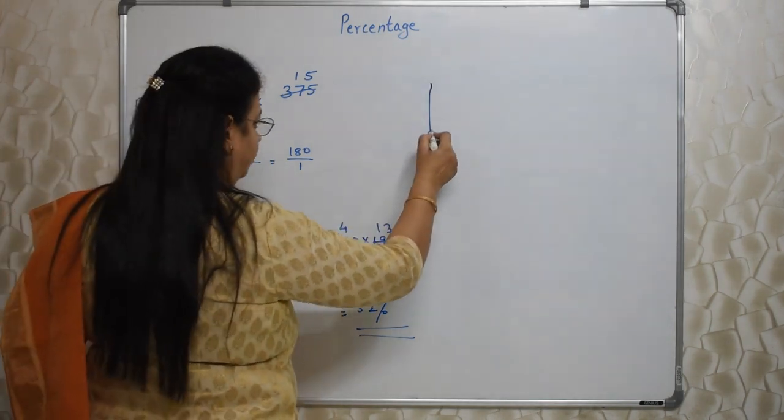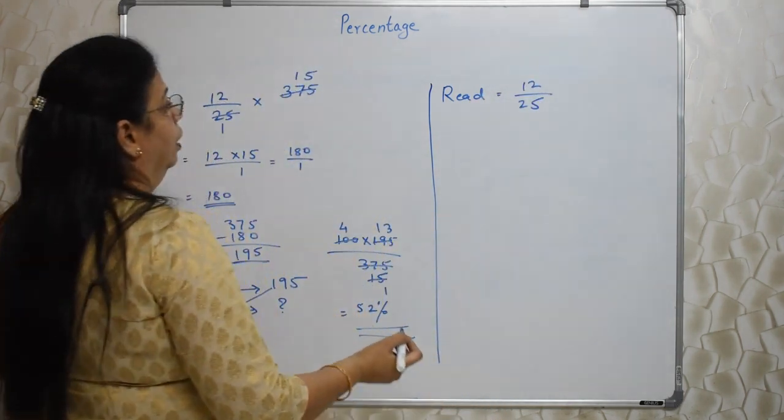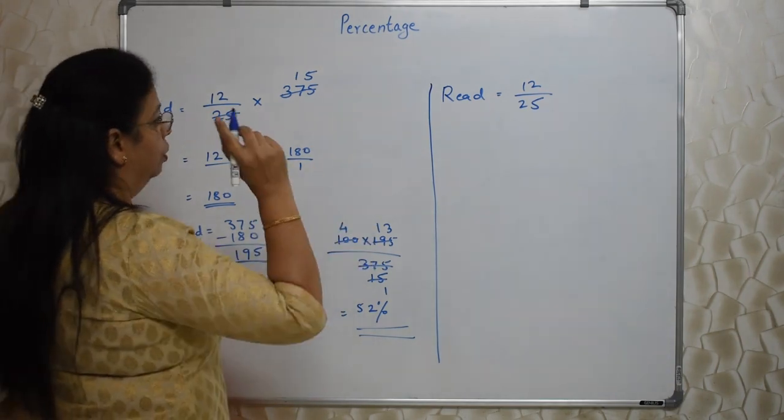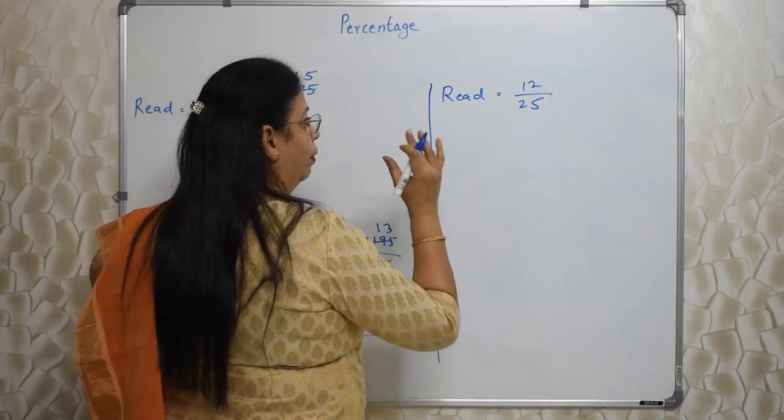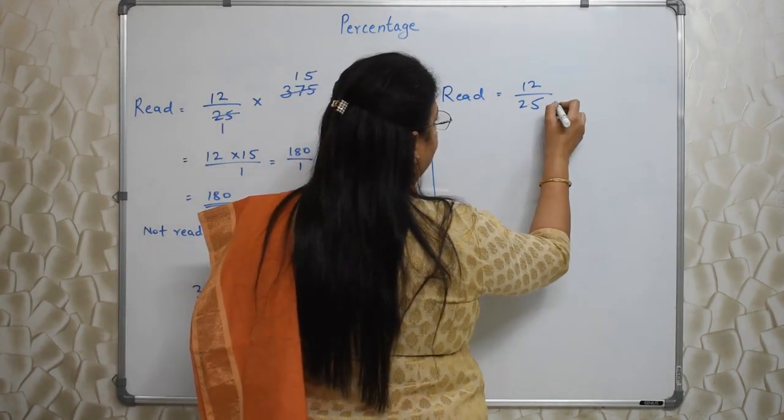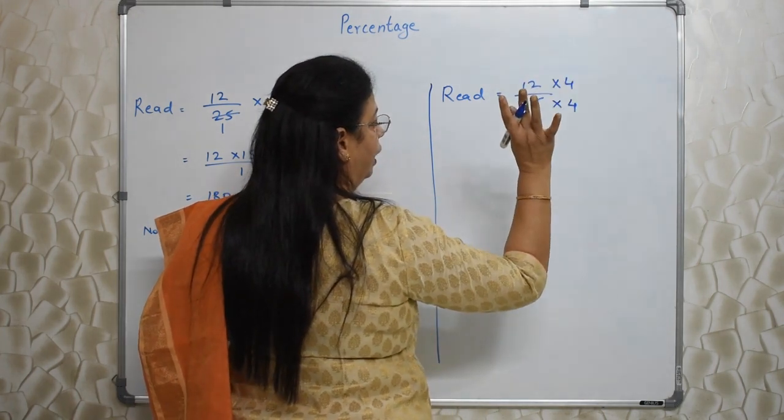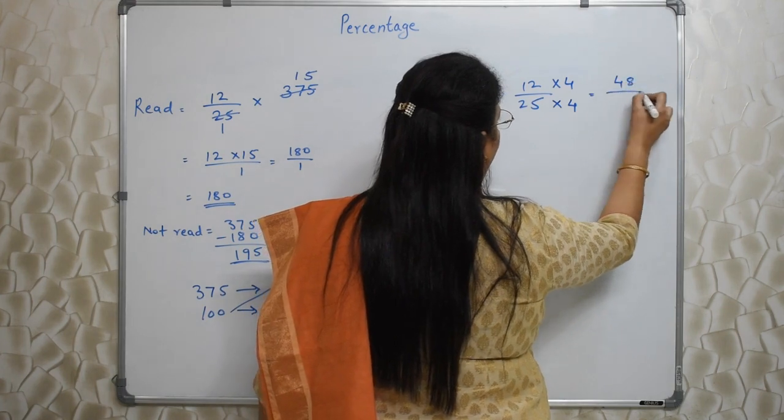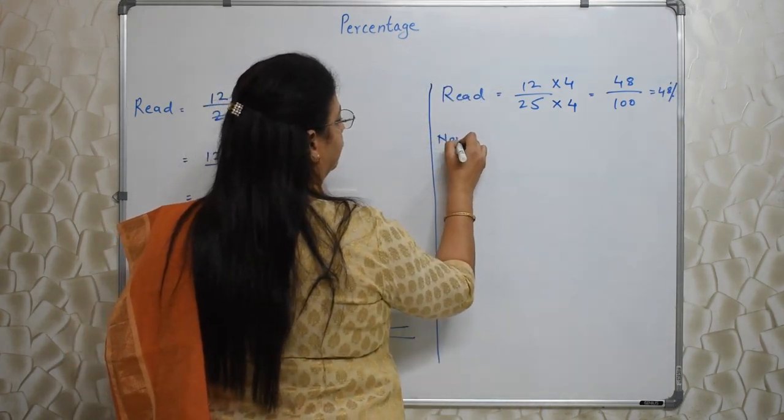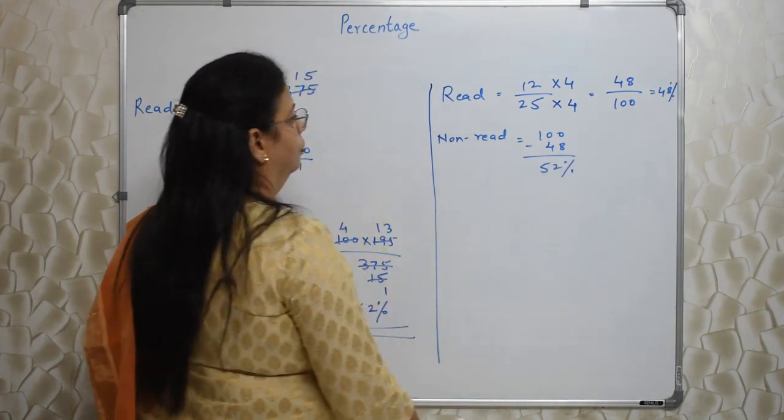Now the simple method. Red ka portion kitna diya hai? 12 upon 25. Now ultimately they have asked me percentage of non-read portion. We have to think as a student. So basically they want our answer in percentage. So let's convert this into percent. Percent means niche 100 hona chahiye hai. Kaisi milega? Into 4, into 4. Whatever you do to the denominator you have to do for the numerator, otherwise the fraction will change. That is not allowed. So 48 upon 100. So 48 percent are red portion. So how much will be non-red? 100 minus 48, 52 percent. Answer hai hai.